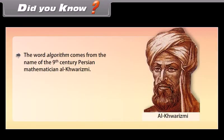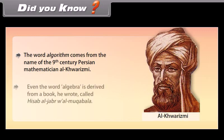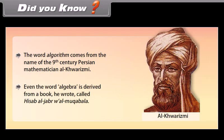Did you know? The word 'algorithm' comes from the name of the 9th century Persian mathematician Al-Khwarizmi. Even the word 'algebra' is derived from a book he wrote called 'Hissab Al-Jabra Wa Al-Muqawala'.